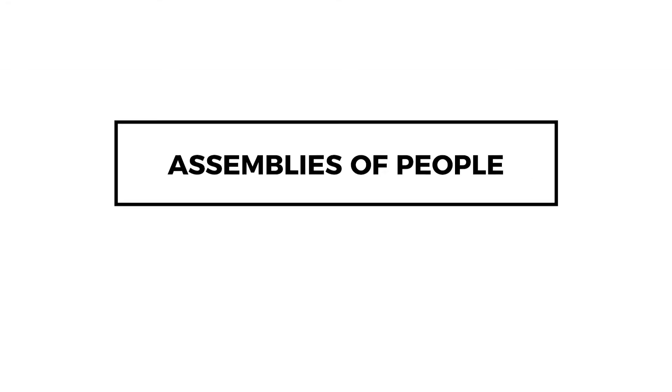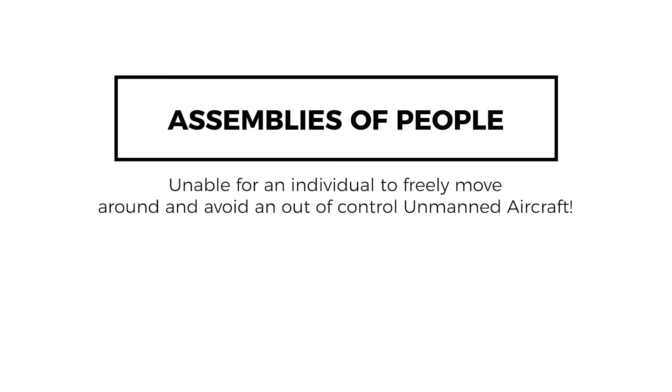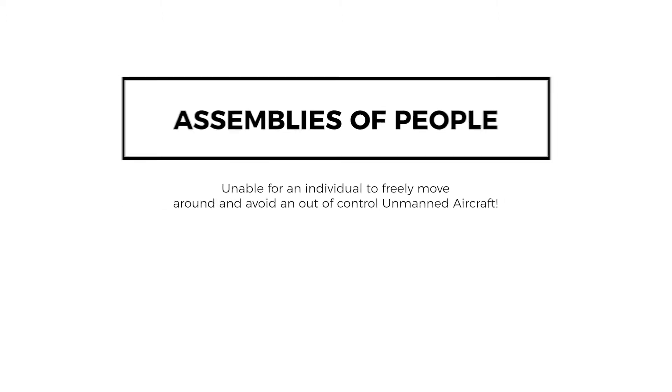We're now going to talk about what is considered as an assembly of people. To put it simply, if a person is unable to move around freely and would be unable to move out of the way of an out-of-control unmanned aircraft, this would be considered as an assembly of people. There's no set quantity of how many people qualify as an assembly of people — it's all based on the ability for an individual to be able to move around freely.